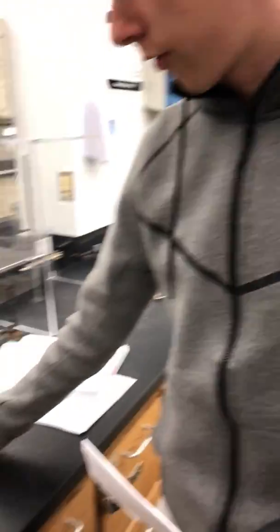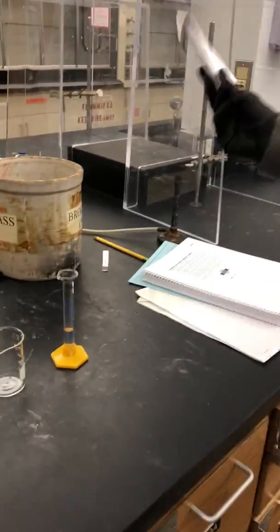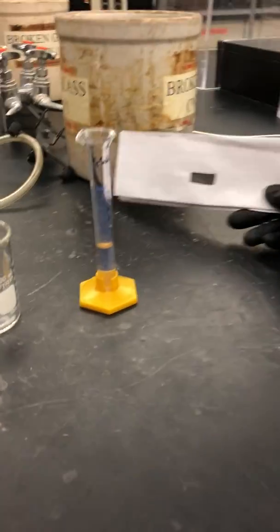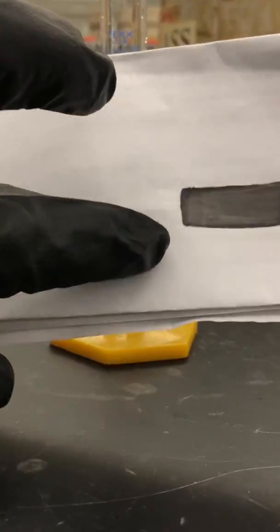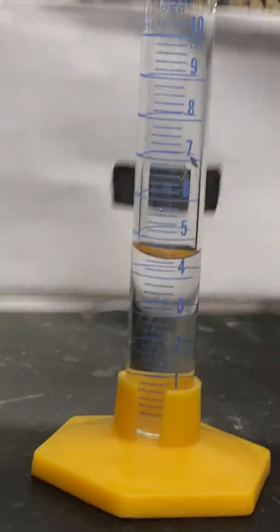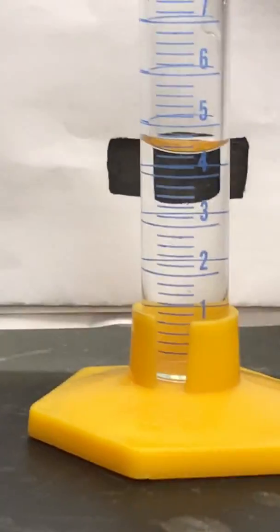Once you have your cylinder and your liquid, you're going to want to get down to eye level so you can get a better view, and then take a dark object and place it behind the graduated cylinder so you can clearly see the meniscus.